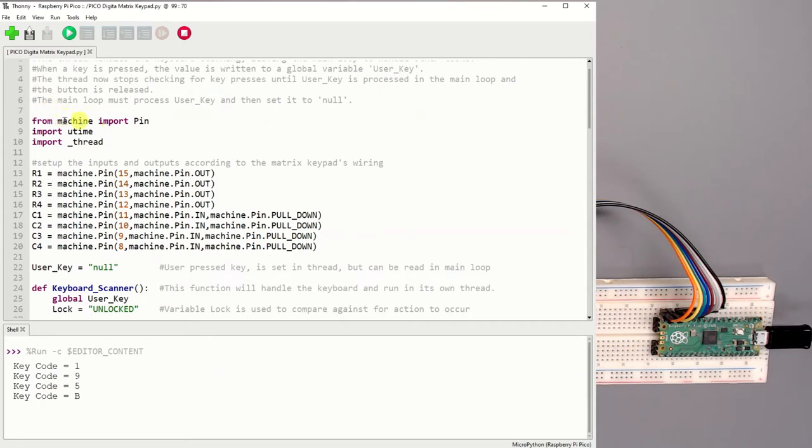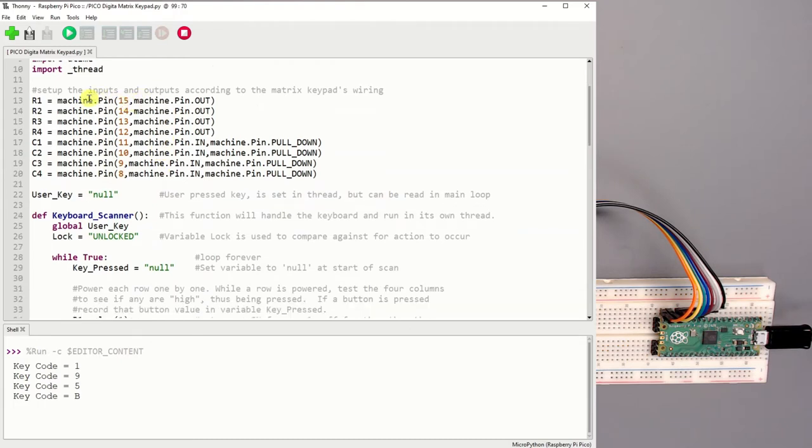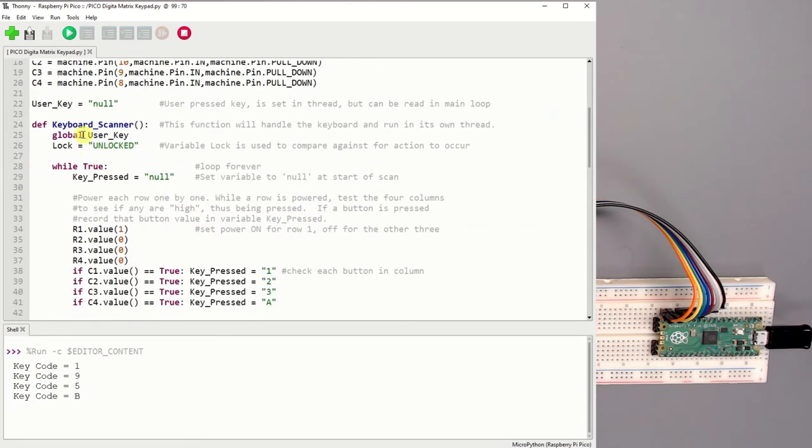As with most MicroPython programs, we're going to import a few libraries. In this case, the machine library, which gives us access to the pins and the ability to control them. The MicroPython version of time, and then we're going to import the thread module. And that's how we can do this multitasking. We're going to configure our row pins or our row objects here that are connected to the pins. 15 through 12, as we discussed earlier, we're going to configure those as outputs. Columns 1 through 4 are going to be connected to pins 11 through 8. Those will be configured as inputs, and we're going to use a pull down resistor to hold that input at zero volts instead of floating.